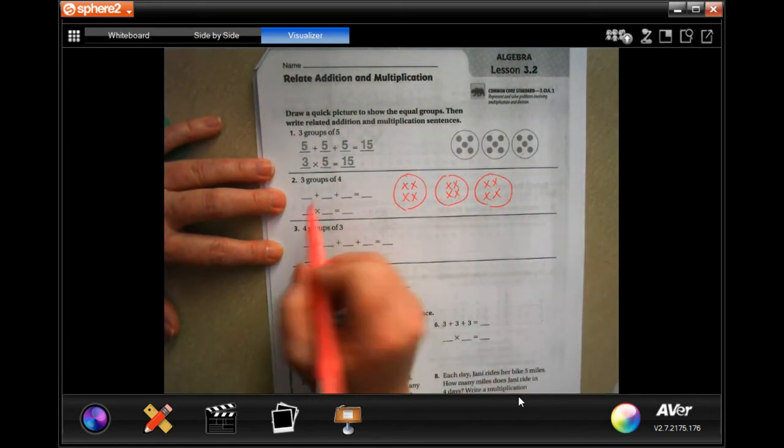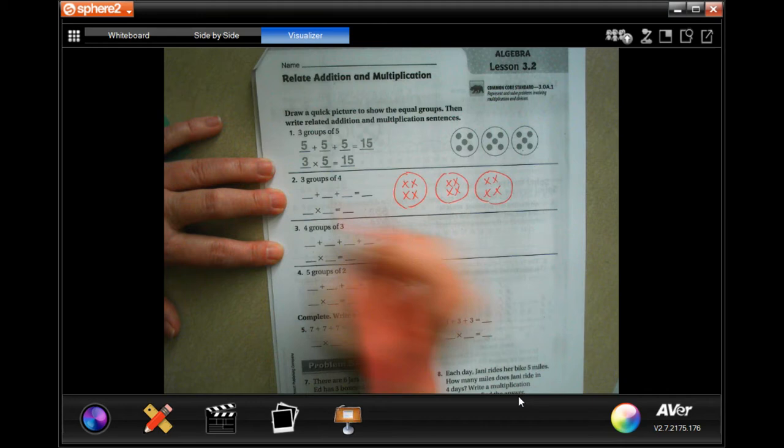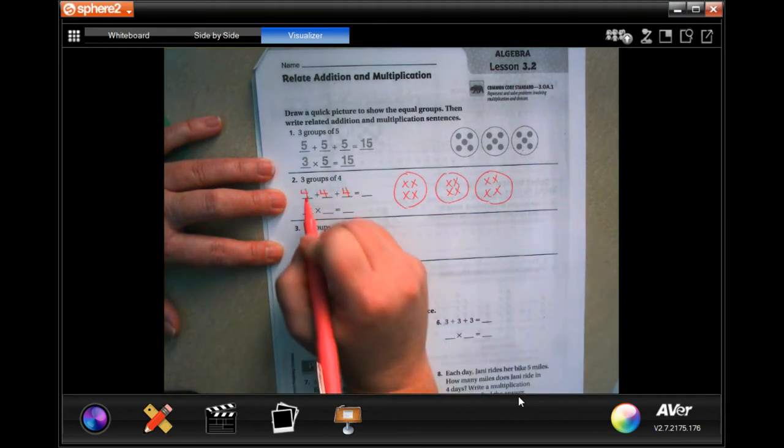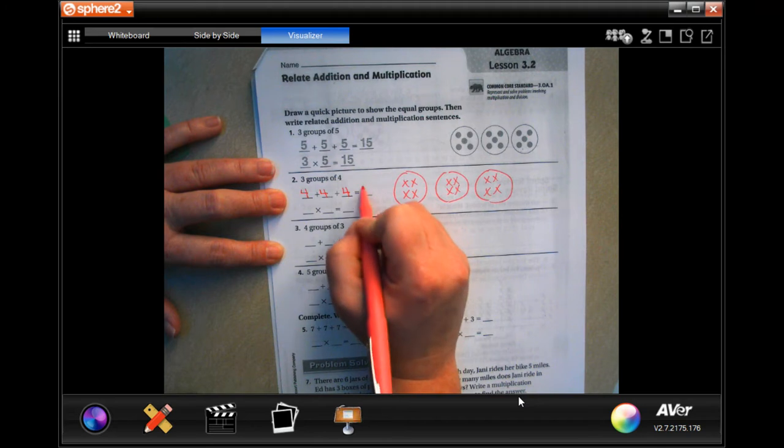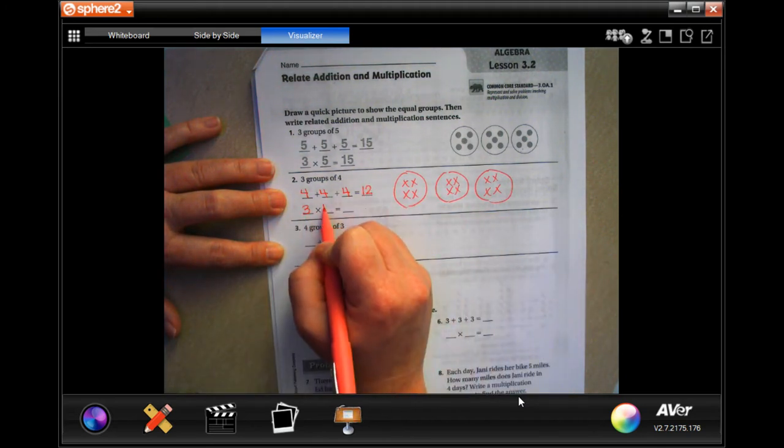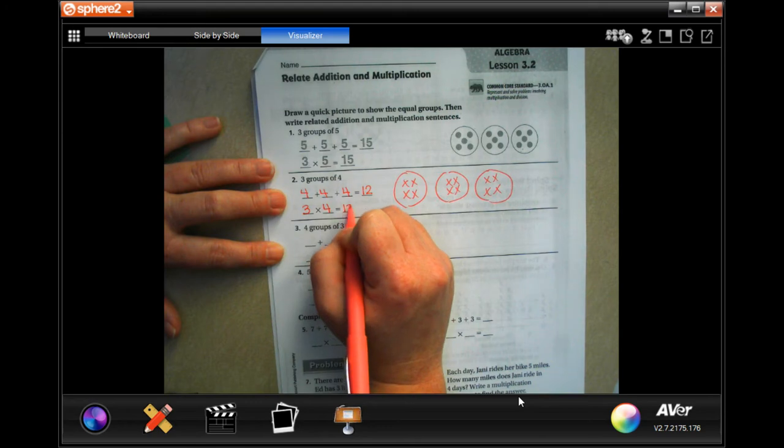So now, there's one, two, three groups, and there's four in each group. Well, four plus four is eight, plus four more is 12. So three groups with four in each is 12.